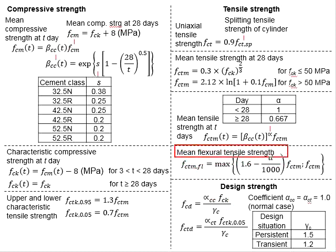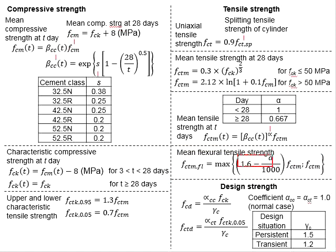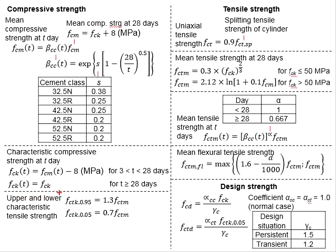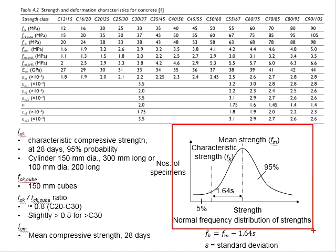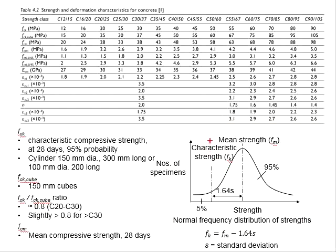The mean flexural tensile strength can be determined using this formula, which is the maximum value of two expressions. There will also be upper and lower characteristic tensile strength values — FCTK 0.95 and FCTK 0.05 — which can be represented by the normal distribution diagram. Both separate the 5% and 95% areas of the normal distribution curve.